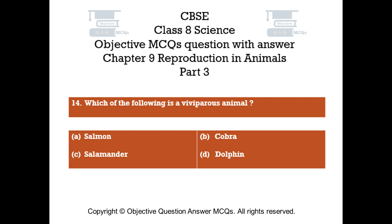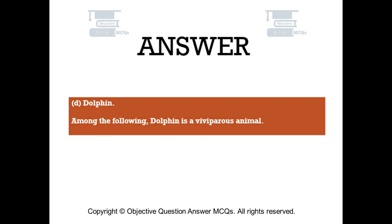Question number 14. Which of the following is a viviparous animal? Option A: Salmon. Option B: Cobra. Option C: Salamander. Option D: Dolphin. The right answer is option D — Dolphin. Among the following, dolphin is a viviparous animal.